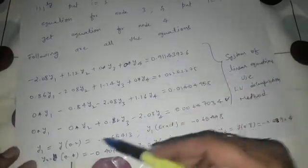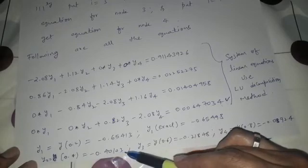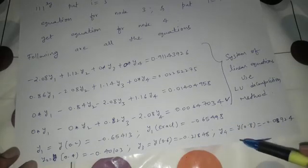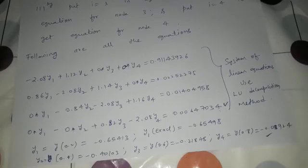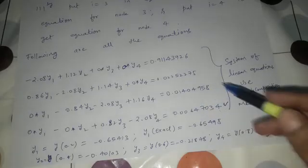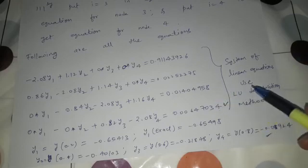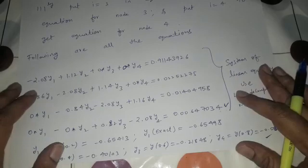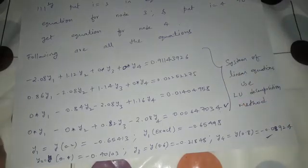Similarly, solving gives y_2 = −0.40103 at x = 0.4, y_3 = −0.21848 at x = 0.6, and y_4 = 0.08924 at x = 0.8. In this way, using the finite difference method you can solve any complex boundary value problem very easily. Software packages use this method in the background, and when we cover MATLAB lectures we will solve even complex nonlinear differential equations. You should understand how the software solves the problem before using it.